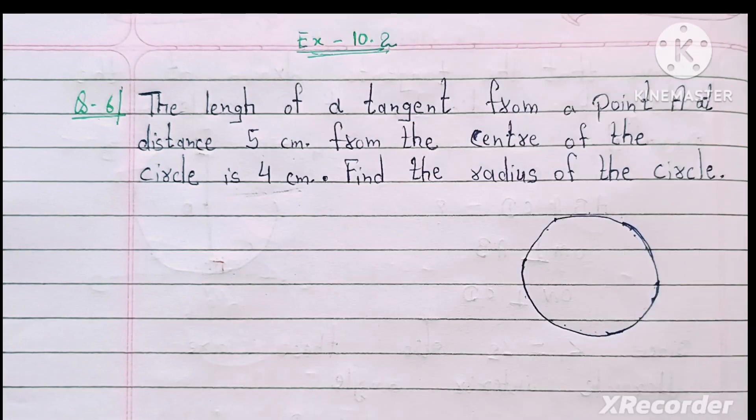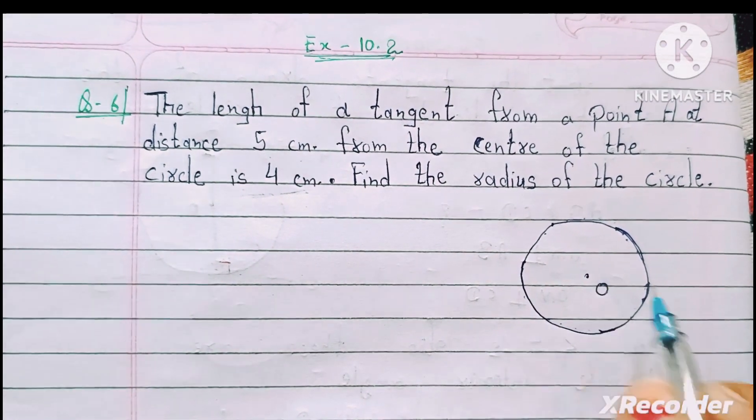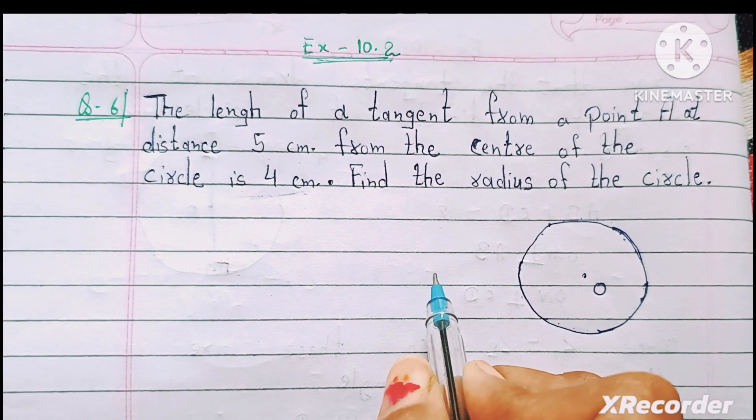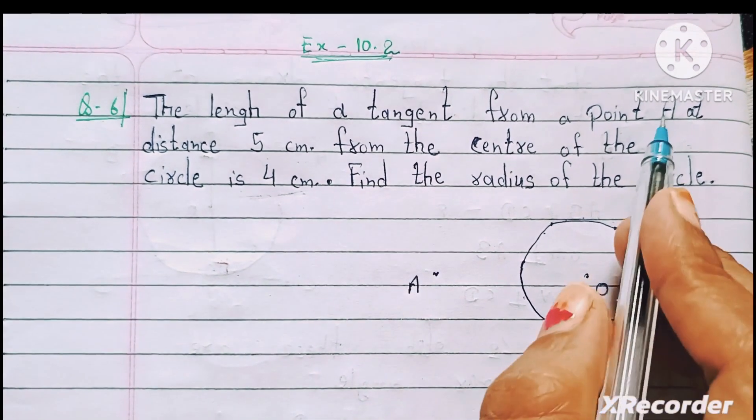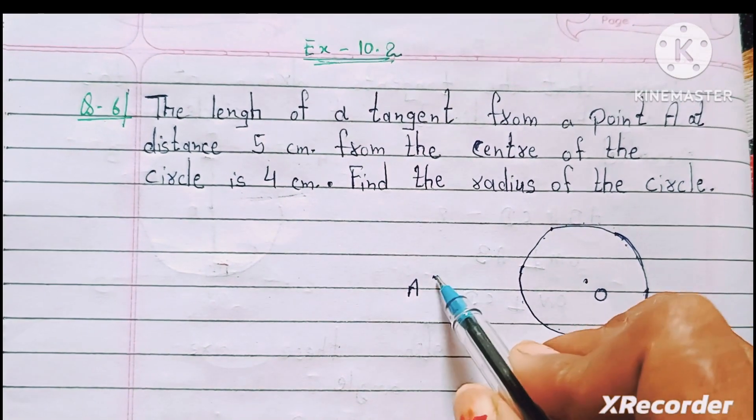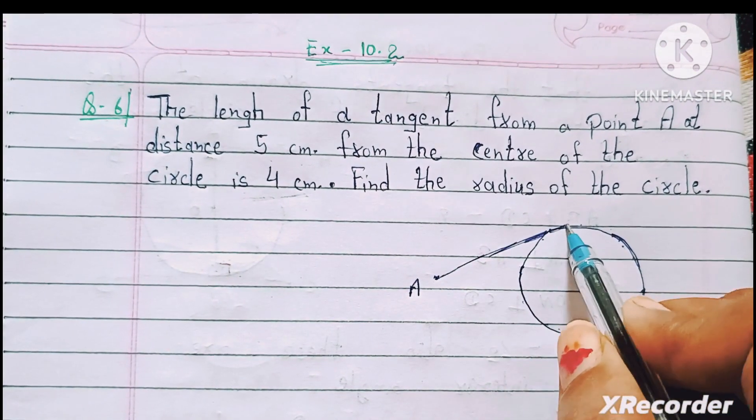Is tariqa se circle draw kar layenge. Yaha pe center O hai. Yaha pe koi point A hai, jo ki question me bola gaya hai. Yaha pe tangent hai. Is tariqa se ye tangent bana hai.